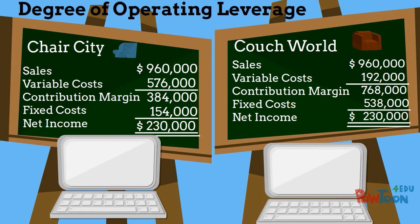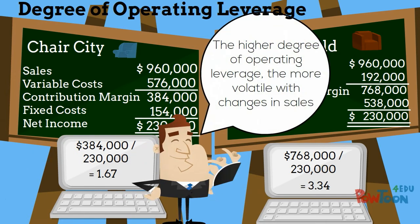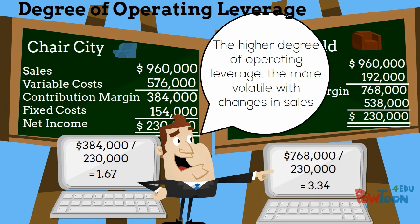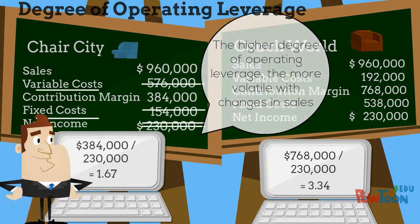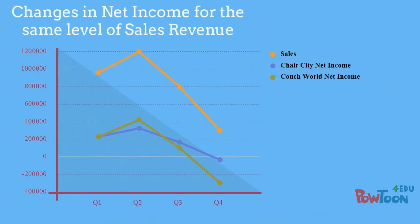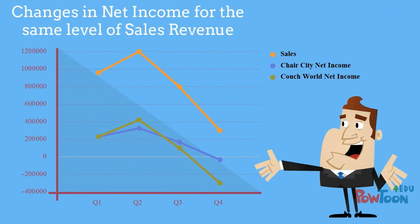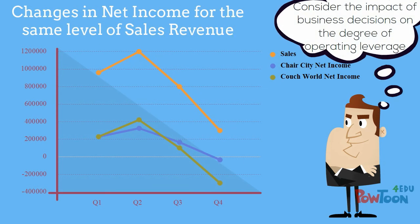When we calculate the degree of operating leverage for each company, we see that Couchworld has a much higher degree of leverage, meaning that net income will have a bigger reaction — good or bad — to the changes in sales. This graph shows the actual net income that each company would have based on the same sales levels. You can see that Couchworld's net income changes more drastically.